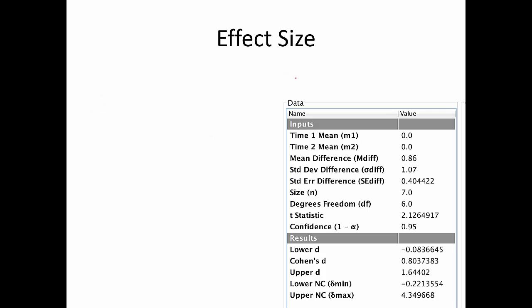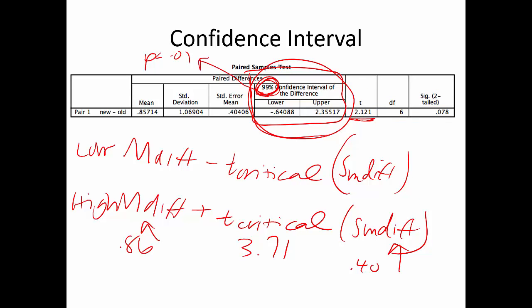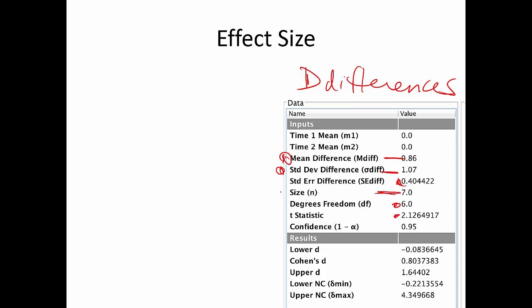For effect size, in MOTE make sure you select d-differences — not the other d option. MOTE has two options for dependent T; the traditional one taught in this class is d-differences. Enter the mean difference, the standard deviation of the differences, and N. It auto-calculates Cohen's d. I got a T-value of 2.13 from MOTE, which matches the SPSS value of 2.12 closely. Cohen's d is technically mean difference divided by the standard deviation of the differences — not the standard error.